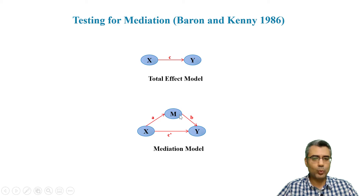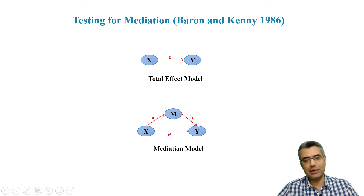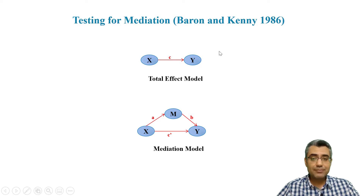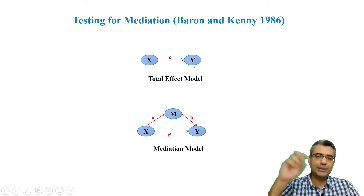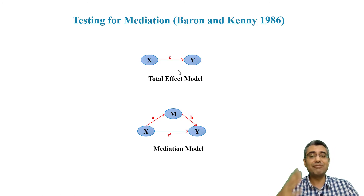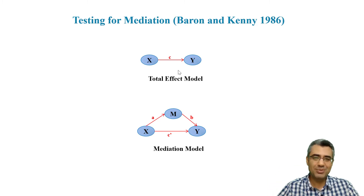There are some weaknesses and limitations when you use Baron and Kenny — read the material I provided to know why we don't use it anymore. We no longer test a and b separately to conclude whether there is mediation. But you need to understand the logic behind the Baron and Kenny test. It says: first, check whether there is any relationship between X and Y — remove all mediators. This is called the total effect model. If that relationship is not significant, Baron and Kenny suggest you cannot test mediation, because mediation explains the relationship.